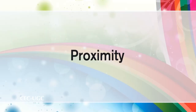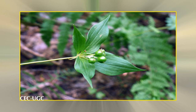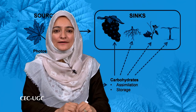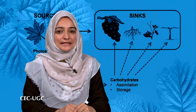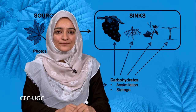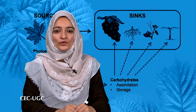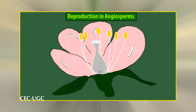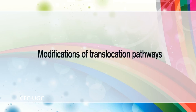Proximity of the source to the sink is a significant factor. The upper mature leaves on a plant usually provide photosynthates to the growing shoot tip and young immature leaves. The lower leaves supply predominantly the root system. Intermediate leaves export in both directions, bypassing intervening mature leaves. Development: the importance of various sinks may shift during plant development. Whereas root and shoot apices are usually the major sinks during vegetative growth, fruits generally become the dominant sinks during reproductive development, particularly for adjacent and nearby leaves.